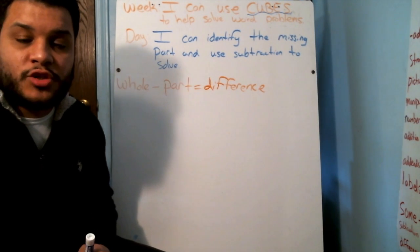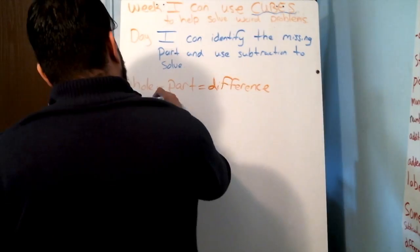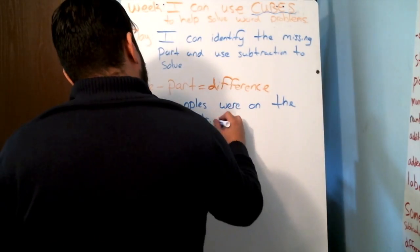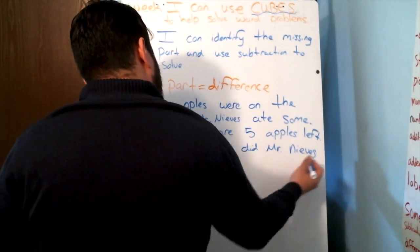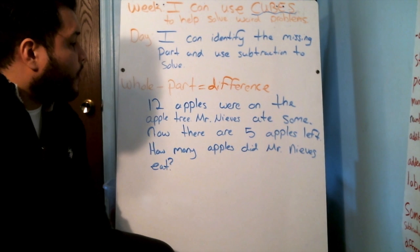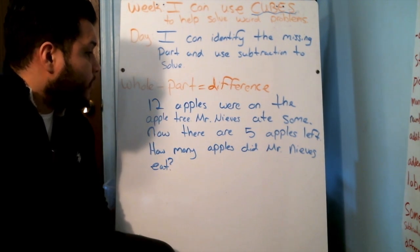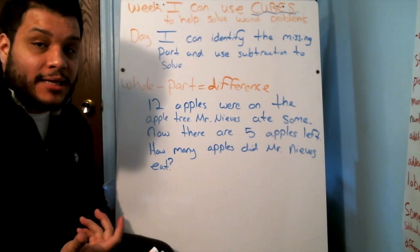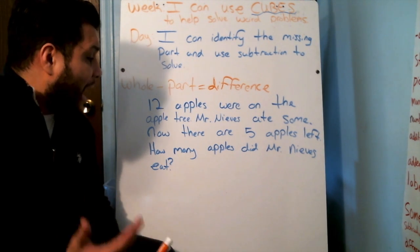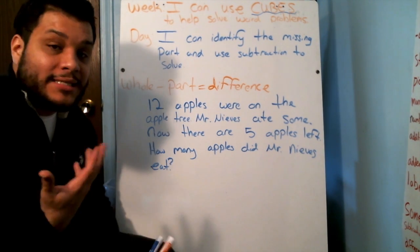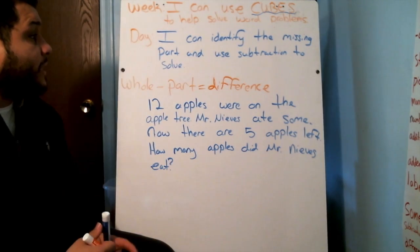And the difference is just what is left. I'm going to leave this on our board today so that we can work through our word problem. Our word problem for today says 12 apples were on the apple tree. Mr. Nieves ate some. I love apples. Now there are five apples left. How many apples did Mr. Nieves eat? We're trying to identify the missing part.